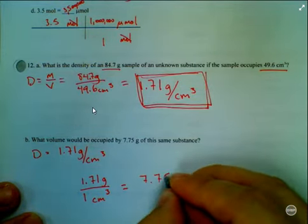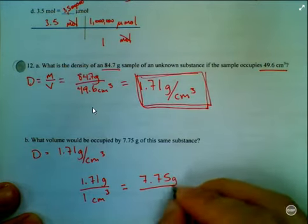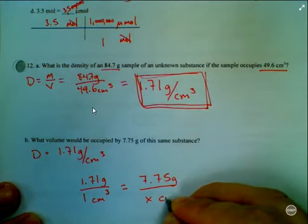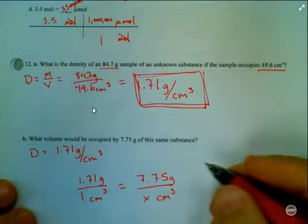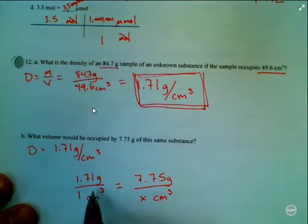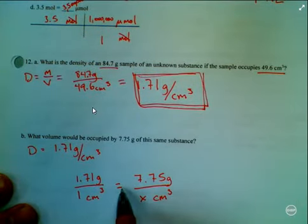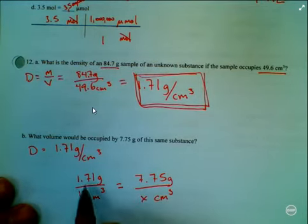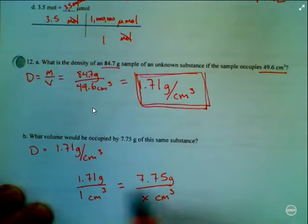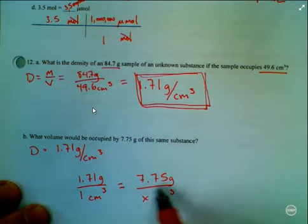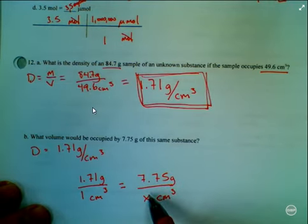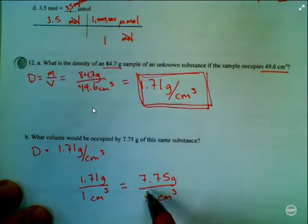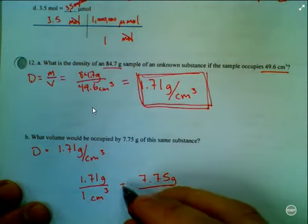Now again, if these are both the same, even though 7.75 is not the same as 1.71, if the ratio—because see, these are both being divided by something—even though this value is ballooned up, as long as this value is ballooned in the exact same ratio, these ratios will remain the same. And so I'll do some cross multiplication.